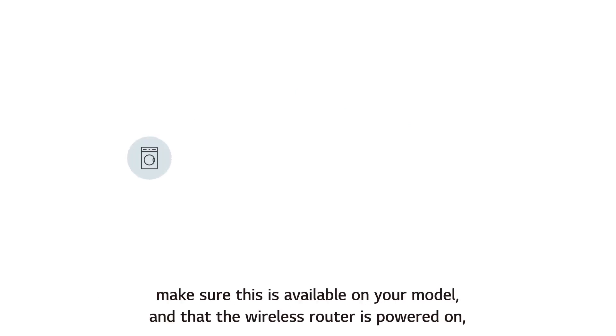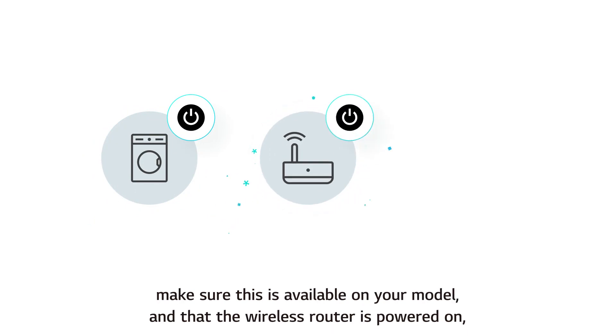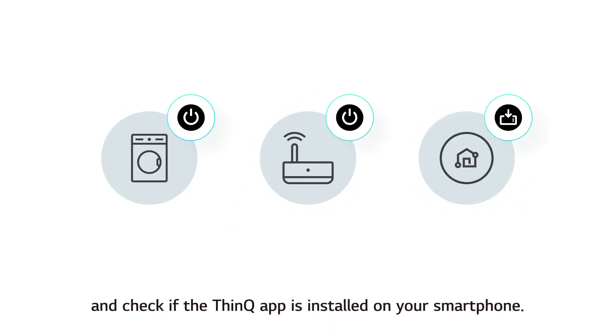Before using the download cycle feature, make sure this is available on your model and that the wireless router is powered on. Also check if the ThinQ app is installed on your smartphone.